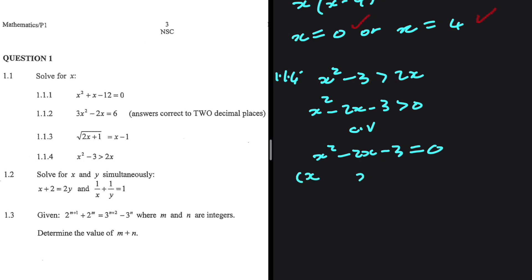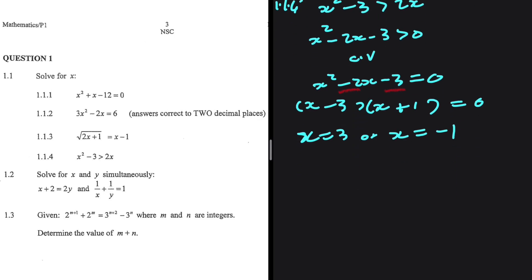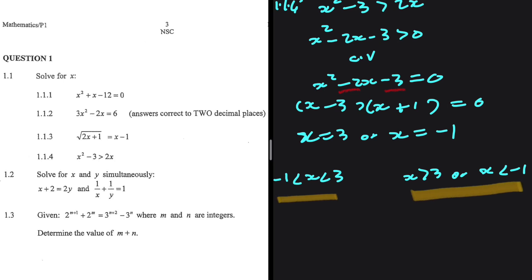So how can we factorize this? Two numbers which when we multiply give minus 3, and when we add give minus 2 — that is minus 3 and plus 1. So x minus 3 times x plus 1 equals 0, giving x equals 3 or x equals minus 1. These are our critical values. You know the two possible answers we can have: either x lies between minus 1 and 3, or x is greater than 3 or x is less than minus 1.